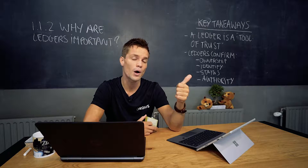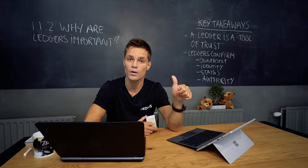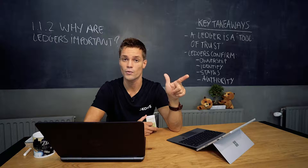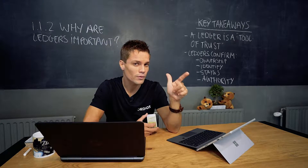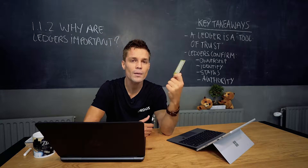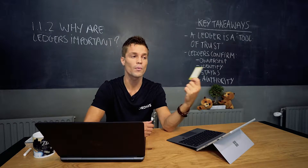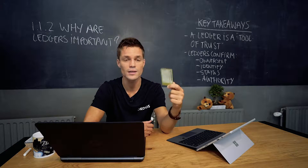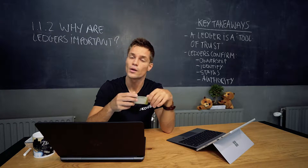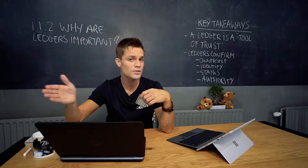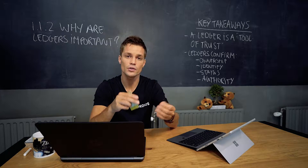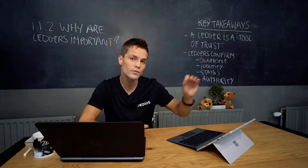Not only do ledgers confirm ownership — for example, knowing what car belongs to whom — they also confirm identity, such as your social security number. A very important part is they also confirm status. For example, with this employee card, when I want to get a cup of coffee I need to check in, going from offline to online, so everybody can see I am in the building. The same goes for your public transport card or your passport — whether you are in the country or outside, whether you are married or not. You as an individual have a certain status according to the ledger.